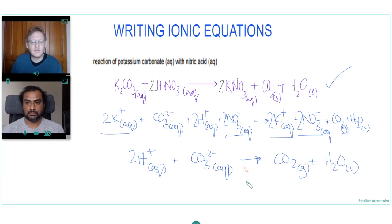So this is our overall ionic equation. Essentially, you can see there an acid and a carbonate gives carbon dioxide and water. Nice.